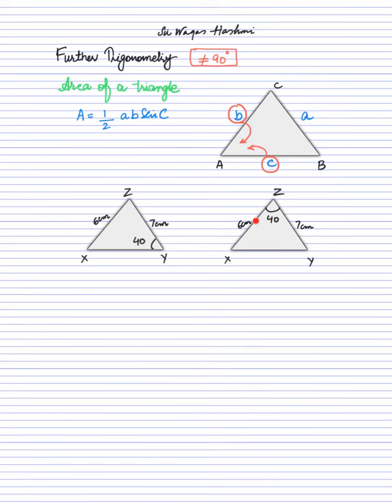But if you observe in that triangle, two sides are known and the angle between these two sides is also known. That means we can apply the working formula: A = 1/2, one side times the second side times sin of the angle between these two sides. The first side is 6, the second side is 7, and the angle is 40. You can calculate the area. Make sure that your calculators are in degree mode, not in gradient mode.